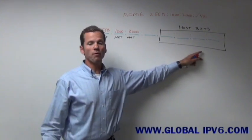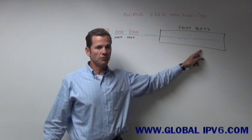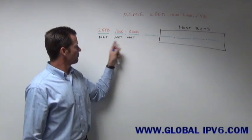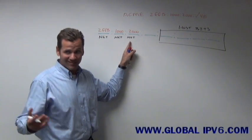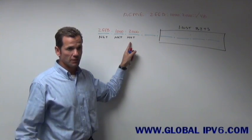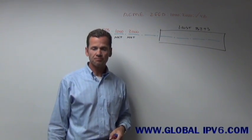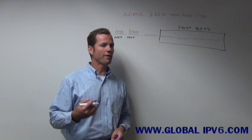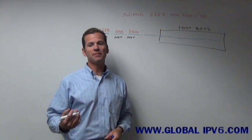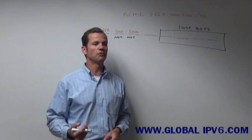So if the last 64 bits are assigned for the host, and the first 48 bits are assigned for basically your network portion, really what you're going to have left is these next 16 bits. And that's typically when we're out in the field, we're subnetting a lot of times on that fourth field right there.